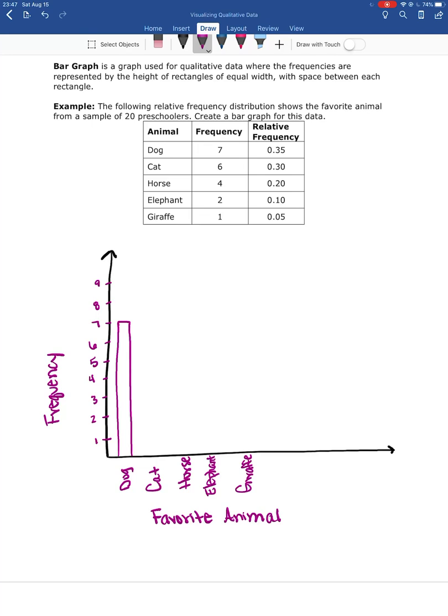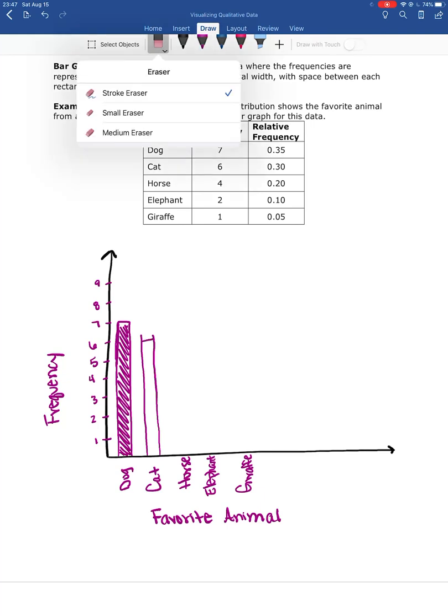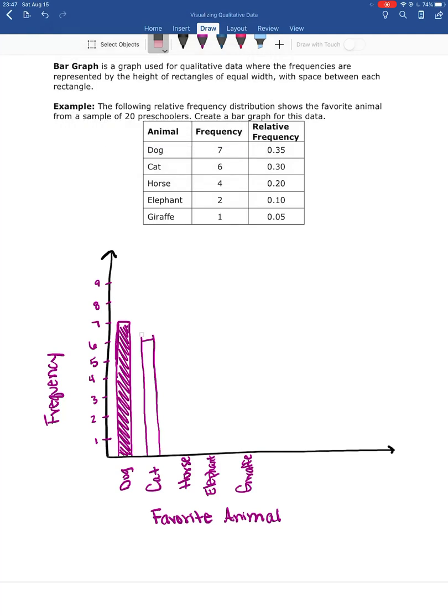And then you can leave it not shaded in or you can go ahead and color in that rectangle—it's up to you. Okay, we want to try and make sure that the lines of our rectangle are straight. I'm not so good at that. And then we're gonna do the same thing. So cat had a frequency of six, so I'm gonna come up to six, and we want this rectangle to be the same size as the one that we did for the dog. Okay, I'm gonna do a little bit of erasing just because I went a little too far.